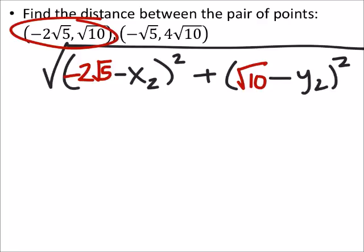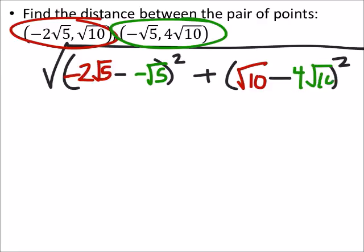Then, I've got an x2 value, so this will be my second point. So x2 would be that negative square root of 5. And yes, that now is a minus a negative. And then also the y2 is 4 times the square root of 10.